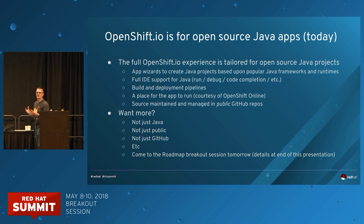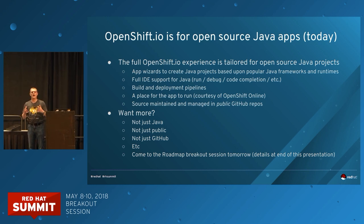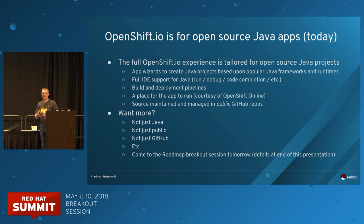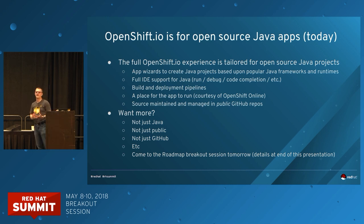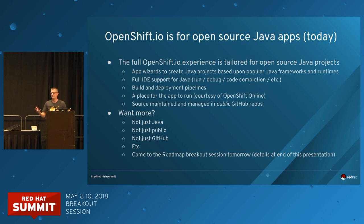The grand vision of OpenShift.io is so you can build any kind of application on OpenShift — not merely a containerized application, but one that really exploits OpenShift. We want you to do that in the language and runtime of your choice, in a crawl, walk, run mode. Today, OpenShift.io is really about building open-source Java-based applications using popular Java frameworks, giving you a full first-class experience.